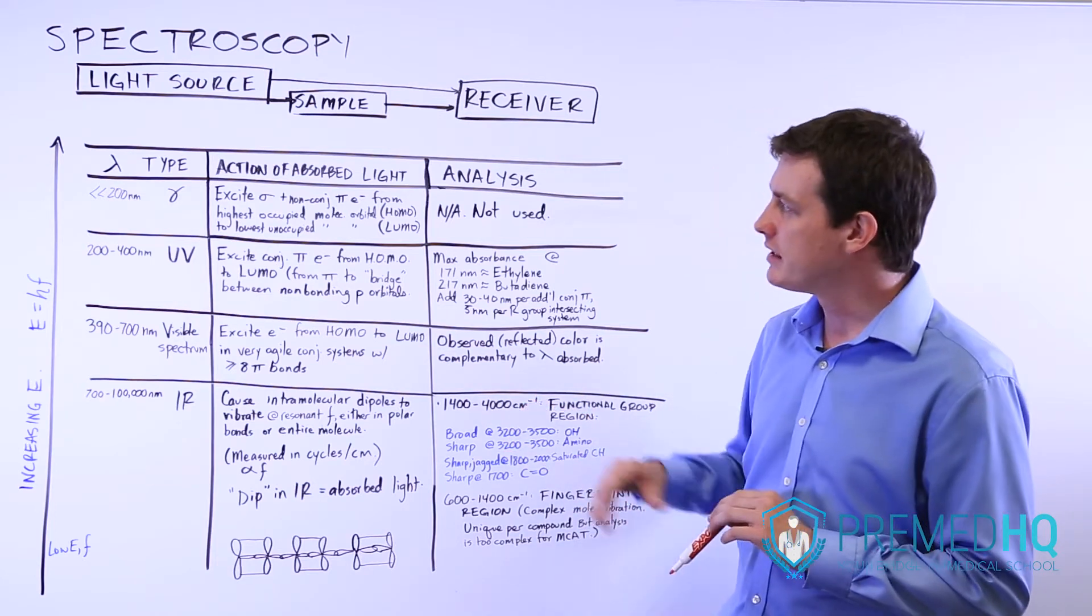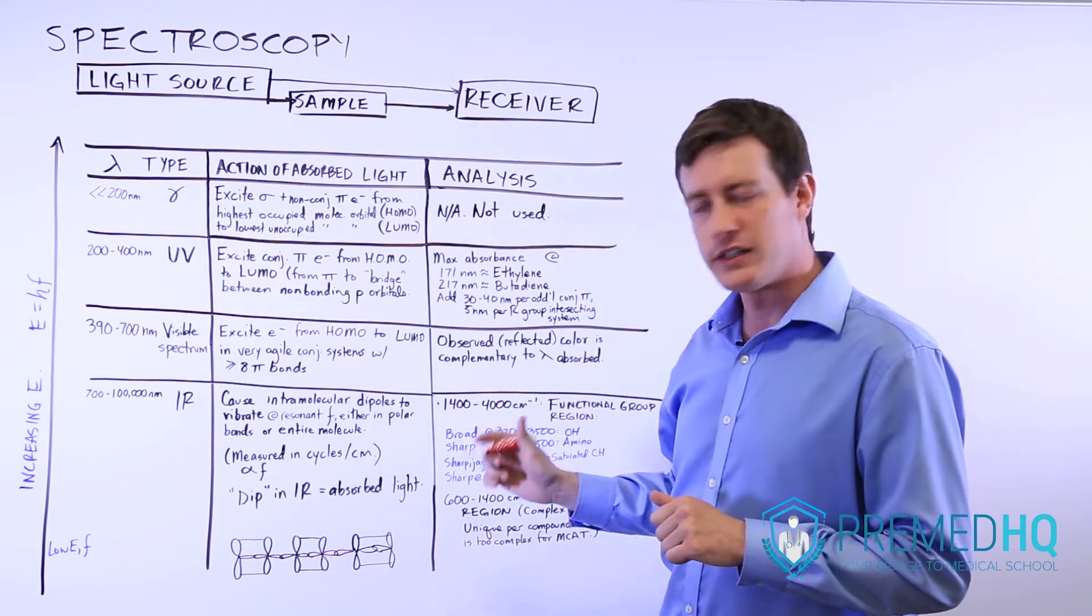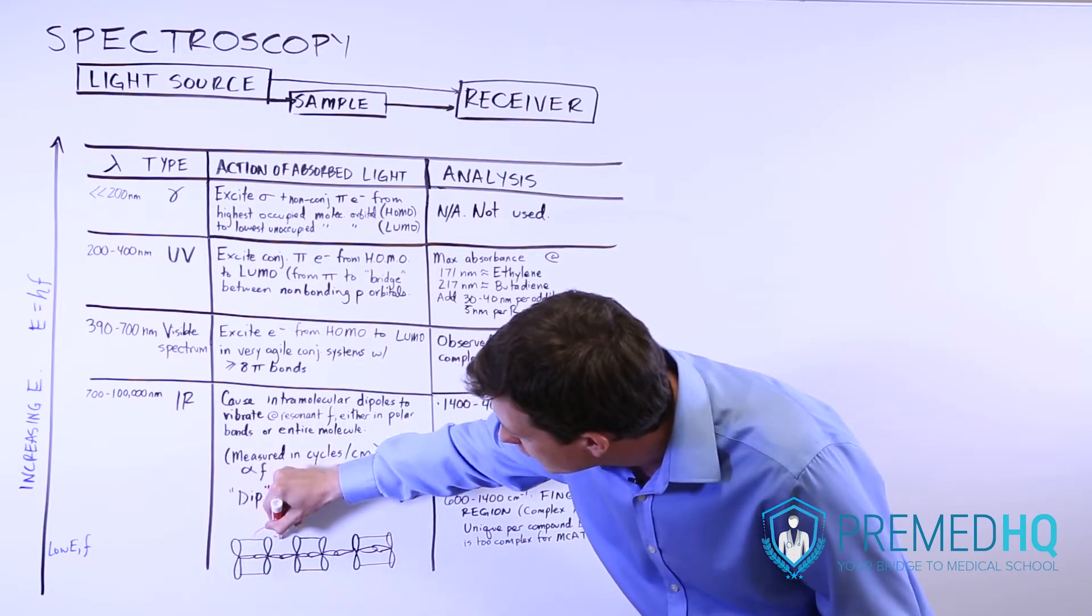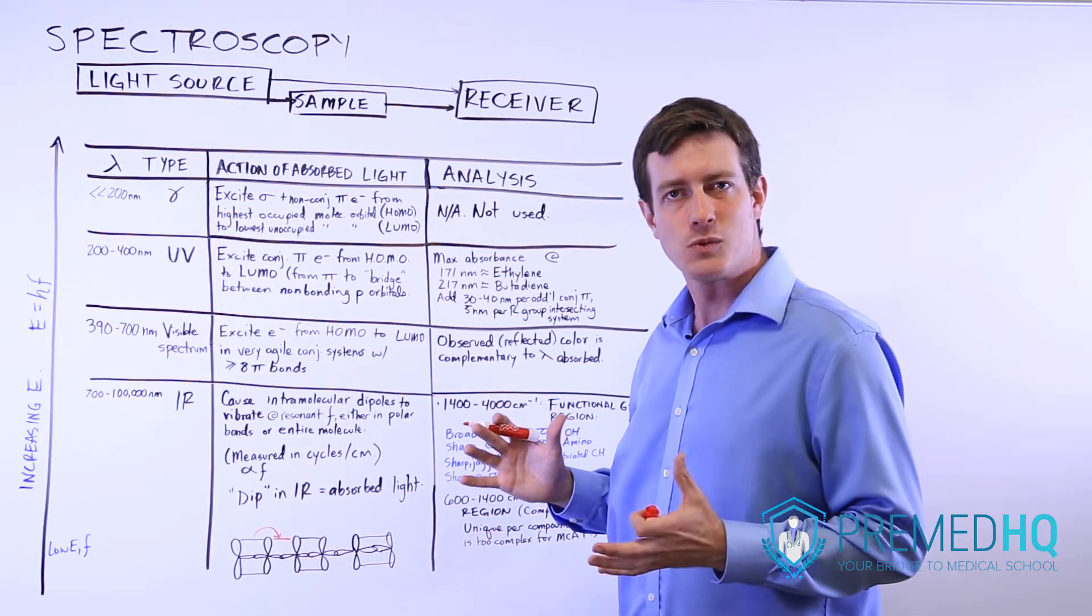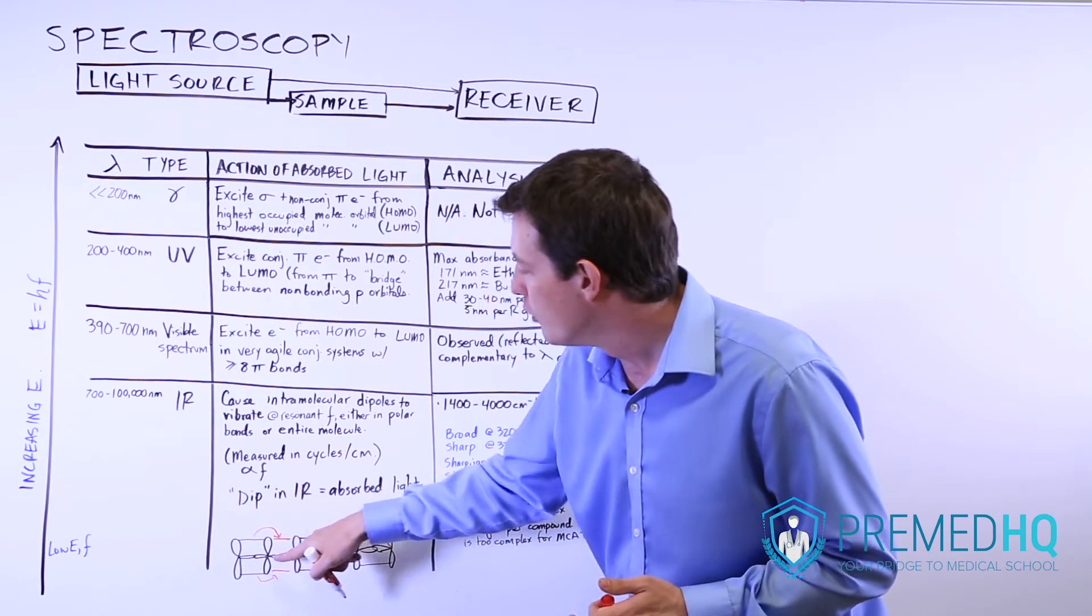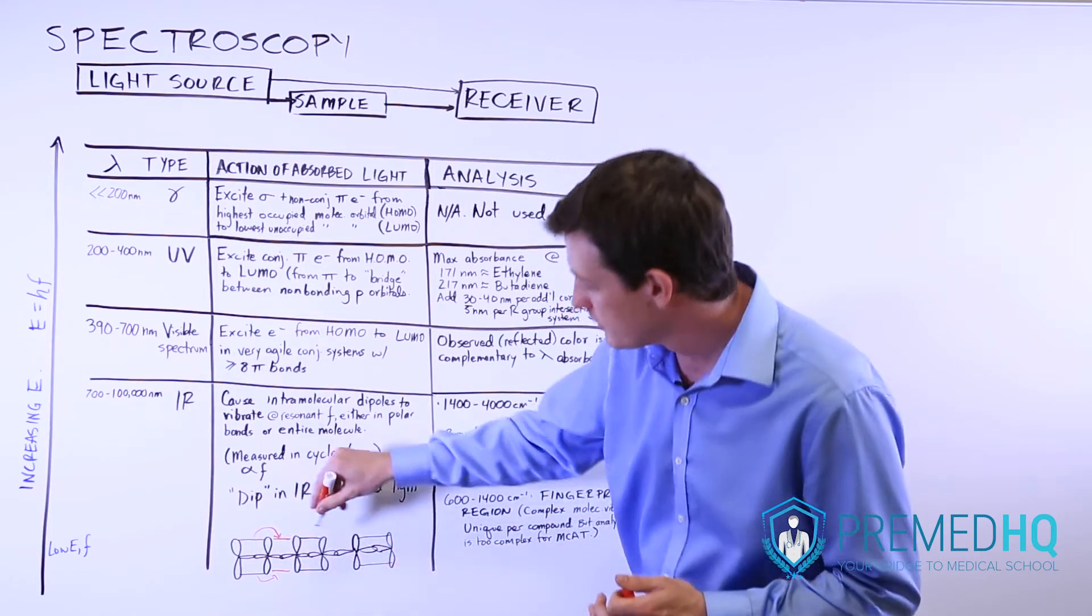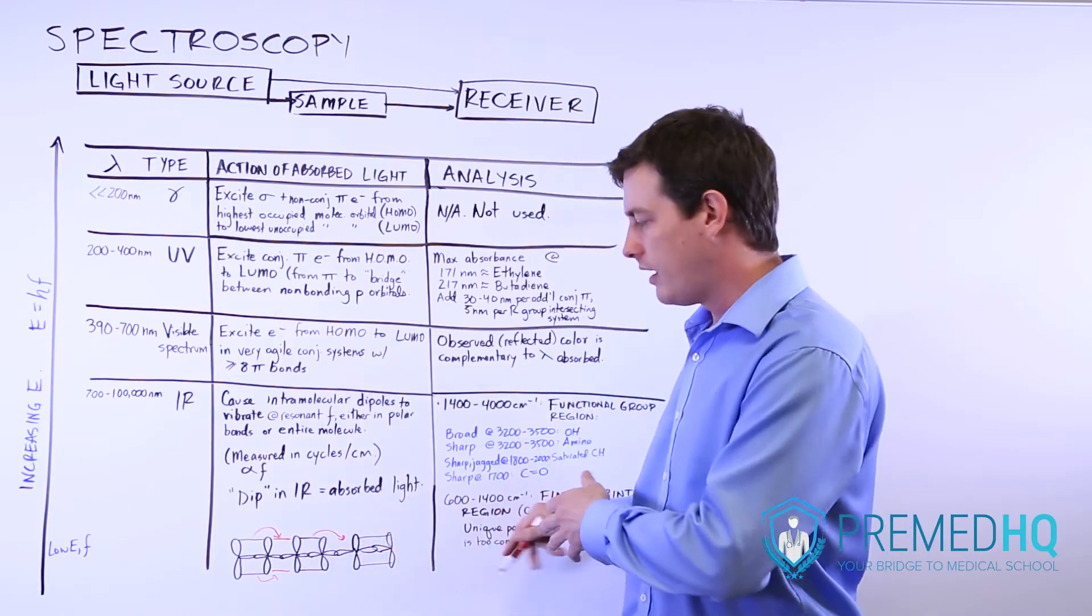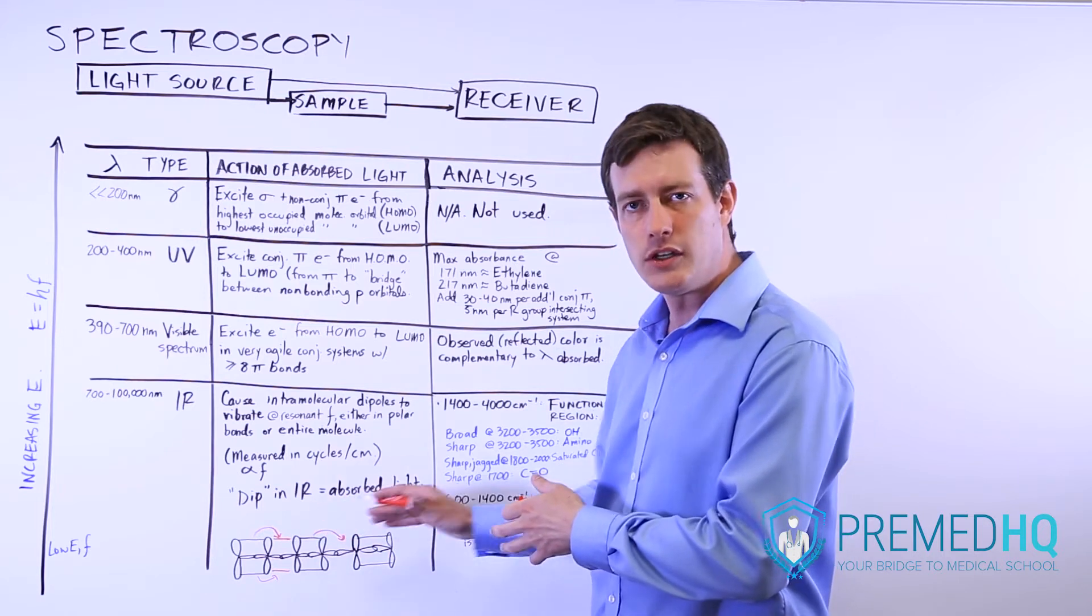And so what can happen is if the light comes in to the sample, the light could be at just the right energy level that it can bump an electron from this pi bond over here to form a new pi bond there. And that's when resonance occurs. It's when you bump the electrons from a pi bond like that over to create a new pi bond that's kind of a bridge between these two p orbitals. And this can then result in some downstream effects of other electrons in pi bonds being excited up to a newer level.